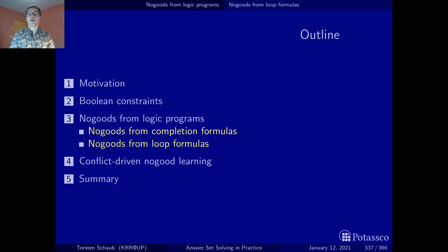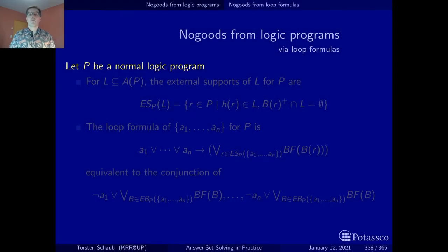We've just seen that we can derive the no-goods from completion formulas more or less in a direct way, just via a couple of logical translations. The same can now be done with loop formulas. Before defining the actual loop no-goods, let me first recall a few concepts from the axiomatic characterization of stable models in terms of completion and loop formulas, notably concepts such as a loop and a loop formula.